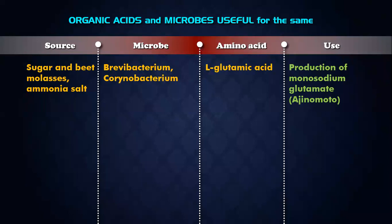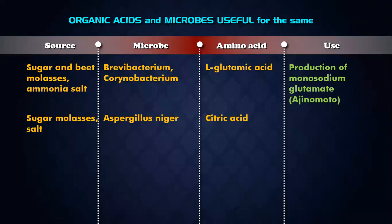Next, we have sugar molasses and salt as the source. Aspergillus niger produces citric acid. Citric acid is used in cold drinks, toffees, and chocolate production.